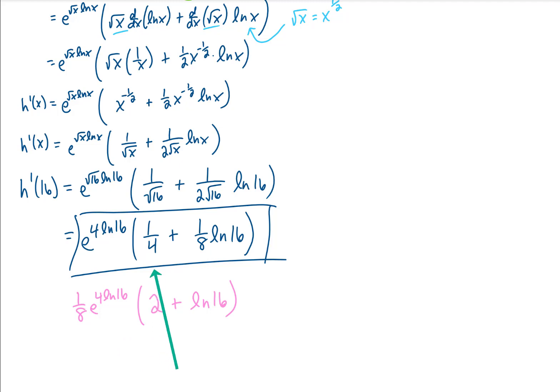1 eighth times 2 would give you this 1 fourth. And this 1 eighth times this natural log of 16 would give you this term up here. So this is another way that you can write it. You can decide which one you like better.